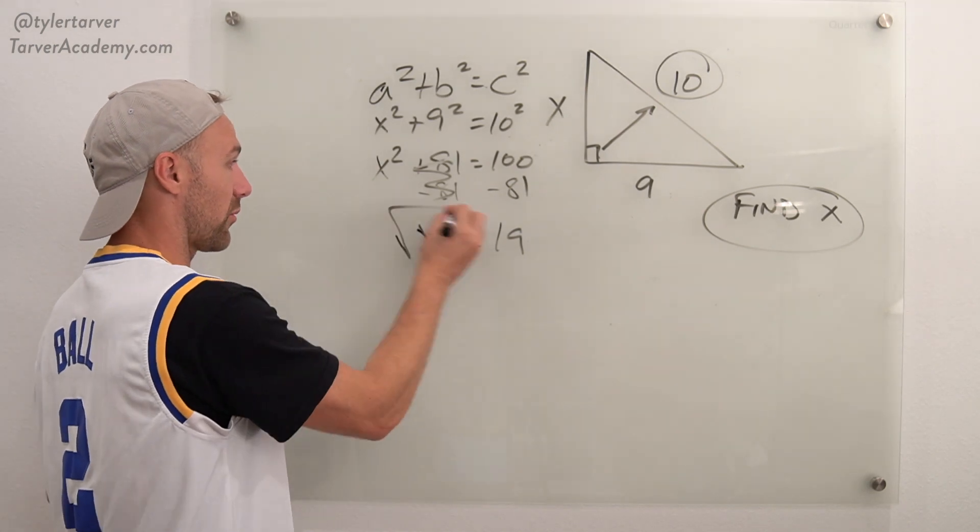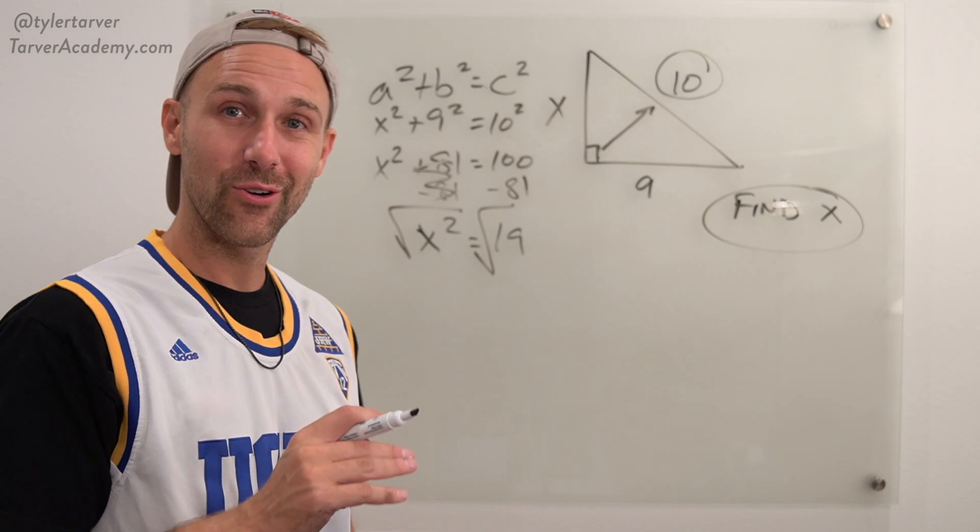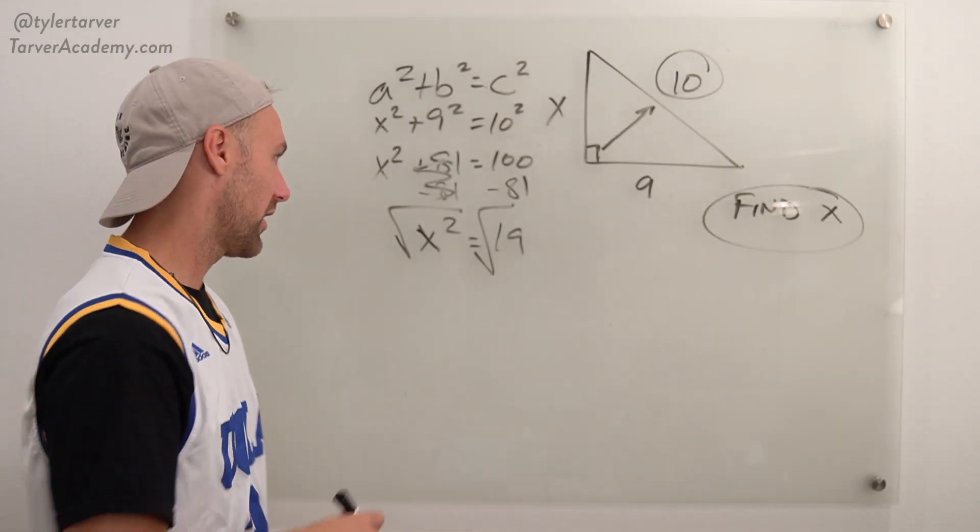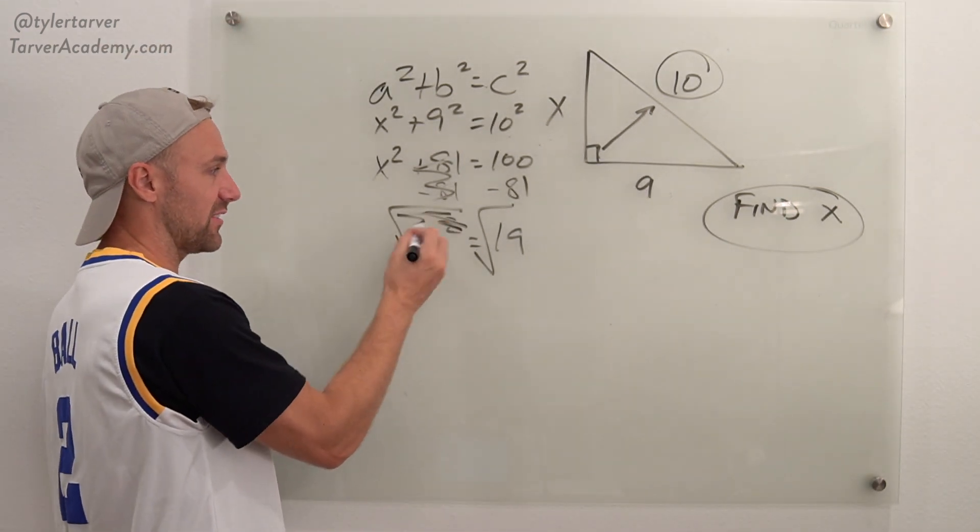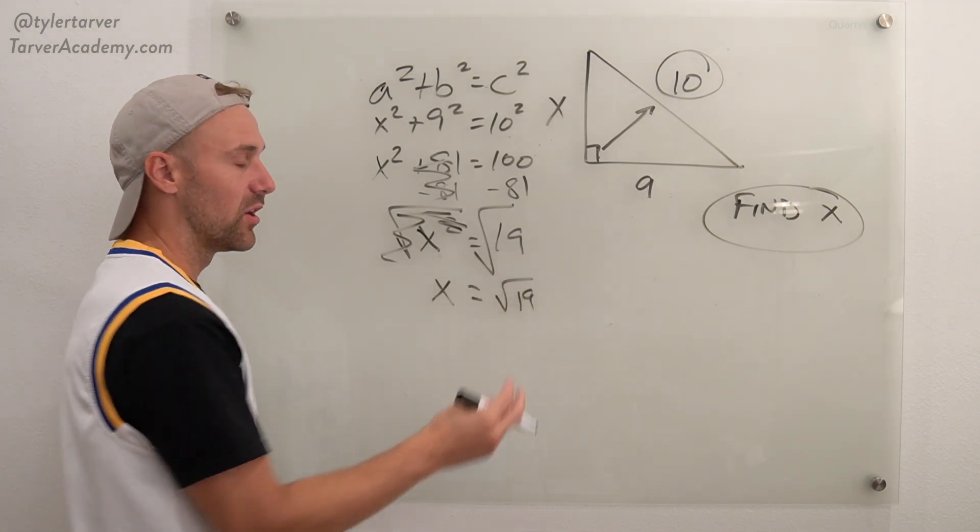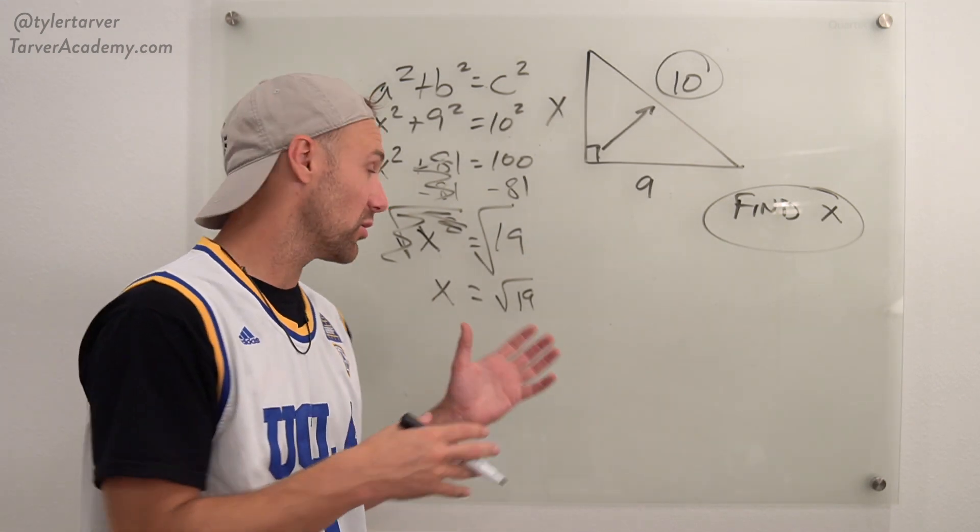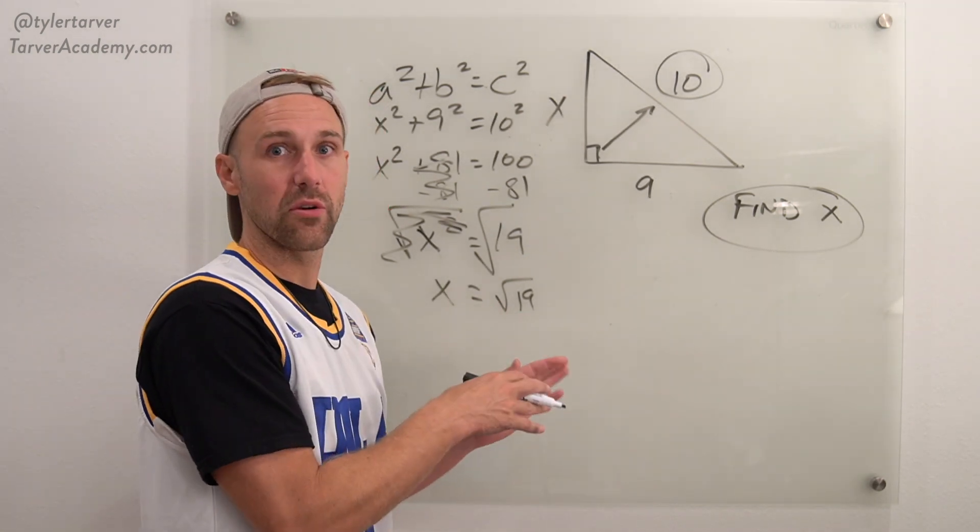So whenever you do square root, it cancels that out. So X equals radical 19. Now some teachers might want this to be how you put your answer. This is the most exact answer you can put.